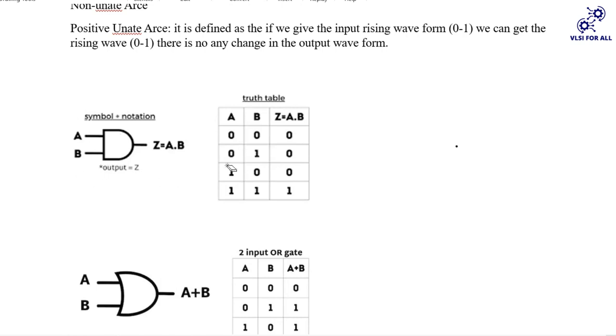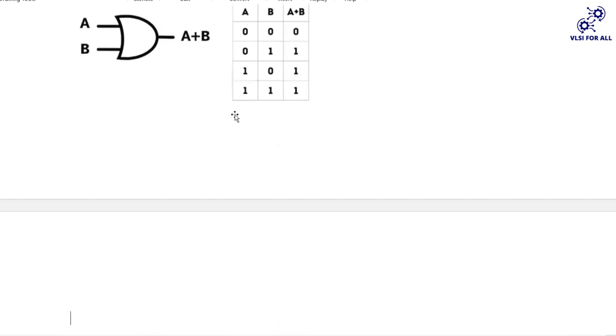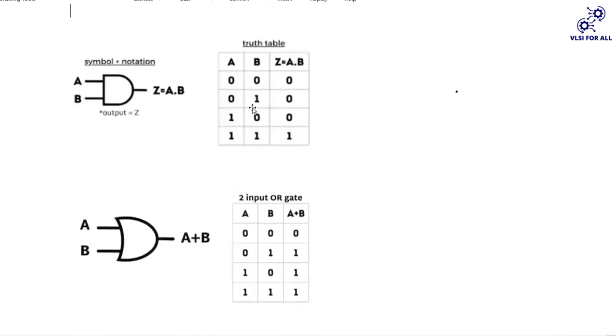AND gate and OR gate are the two examples of positive unate arc.